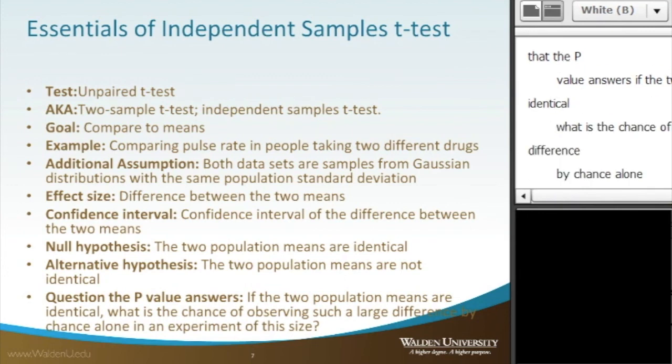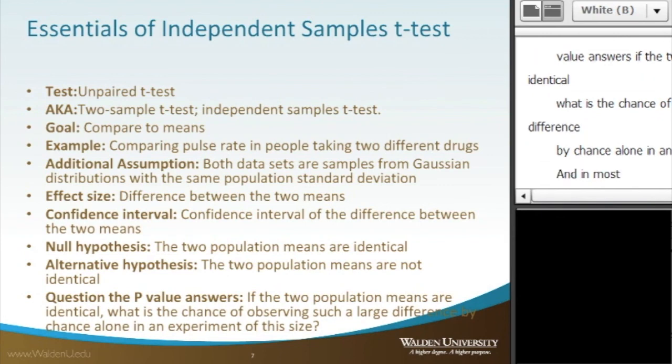When we consider the p-value, the question it answers is: if the two population means are identical, what is the chance of observing such a large difference by chance alone in an experiment of this size? In most statistical analyses, we set our p-value at .05.